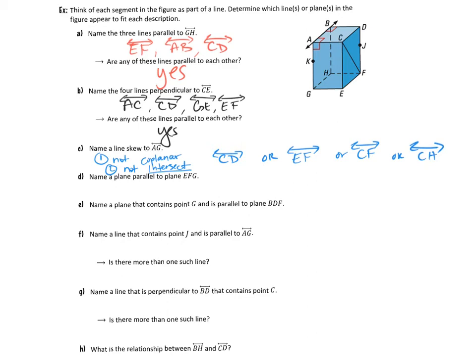Part D asks us to name a plane parallel to plane EFG, which is the bottom of the box in the diagram. A parallel plane never intersects the other. Since EFG is the bottom, the parallel plane is the top. We need three points to name the plane, so we can call it plane ABC, ABD, ACD, or BCD.